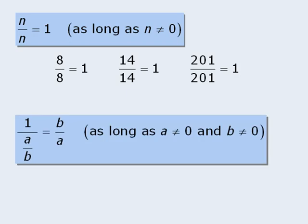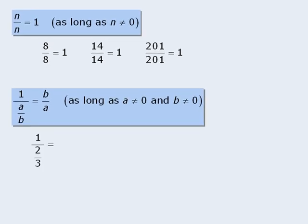Another property says that 1 over some fraction a over b is equal to the fraction b over a. So for example, 1 over 2 thirds is equal to 3 halves. Similarly, 1 over 11 ninths is equal to 9 elevenths, and 1 over 1 thirty-fifth is equal to 35 over 1, which is equal to 35.